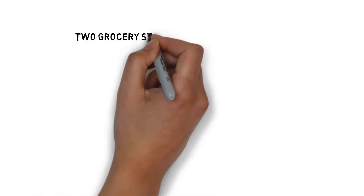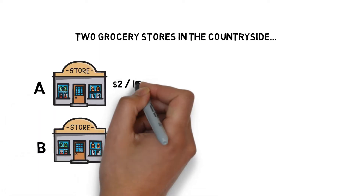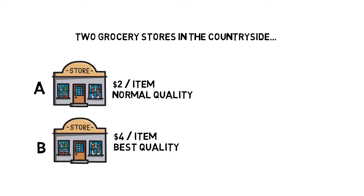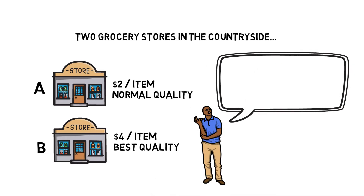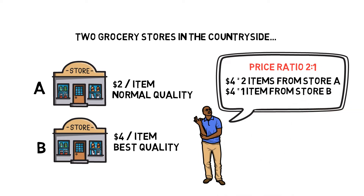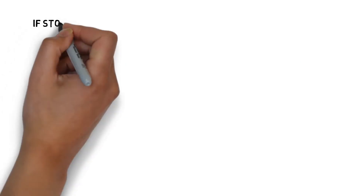There are two grocery stores in the countryside selling similar items. The items in Store A are cheaper — say two dollars — but the quality is not good. The items in Store B have much better quality but cost more, say four dollars each. A customer may calculate that the price ratio between the high-quality and low-quality item is two, meaning four dollars buys two items from Store A but only one from Store B. Although Store B has better quality, many people will consider the price-performance ratio higher in Store A because they can buy more items.